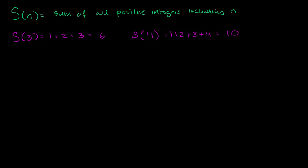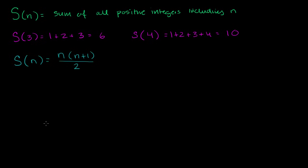What I want to do in this video is prove to you — and there are actually multiple ways to prove this — that I can write this as a function of n. The sum of all the positive integers up to and including n is equal to n times n plus 1, all of that over 2. The way I'm going to prove it is by induction. This will be a proof by induction.